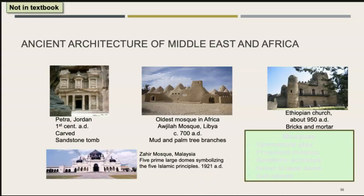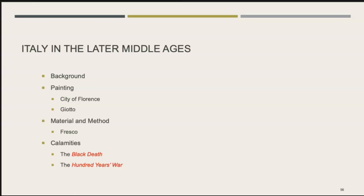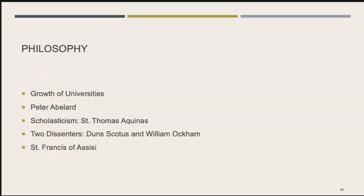In Italy in the later Middle Ages, painting flourished especially in Florence. Artists used frescoes. Some calamities during the later Middle Ages included the Black Death, the Plague, and the Hundred Years War. Philosophically, this period saw the growth of universities and scholasticism by Saint Thomas Aquinas, and Saint Francis of Assisi — well-known for taking people in, blessing animals — had structures devoted to him.